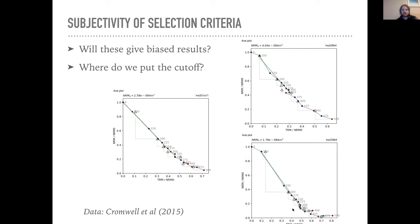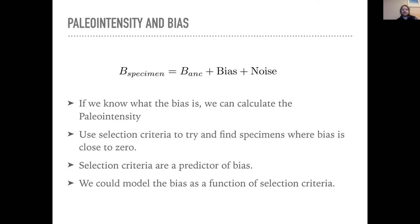The main idea behind this approach is that for any specimen-level estimate — call it B_specimen — you will have something that looks like the ancient field plus some amount of bias and some amount of noise. If we knew what the bias was, we could always calculate the paleo intensity by measuring several specimens, since the noise averages out. What we do with selection criteria is exclude things except where the bias is close to zero, so we don't have to worry about that term.